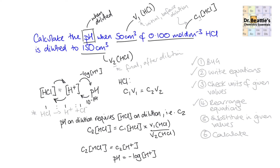We've rearranged the equations; now we substitute in the given values. Taking the given values to work out the concentration of HCl after dilution, if we put this into a calculator we get 0.033. This is sensible because we have diluted the sample — it was initially 0.1, and it's become 0.033. We've essentially diluted it by approximately three times.